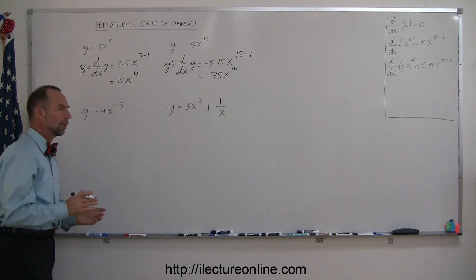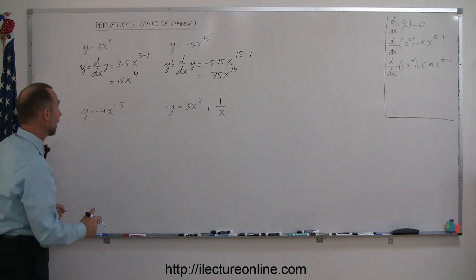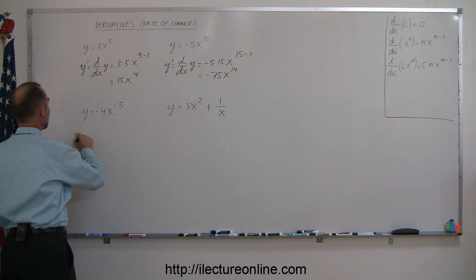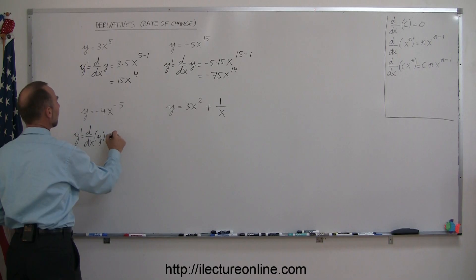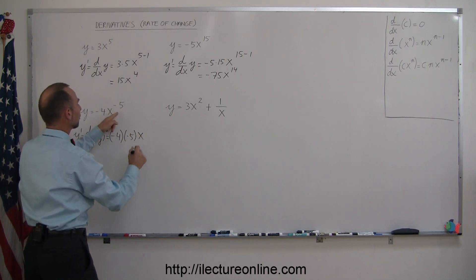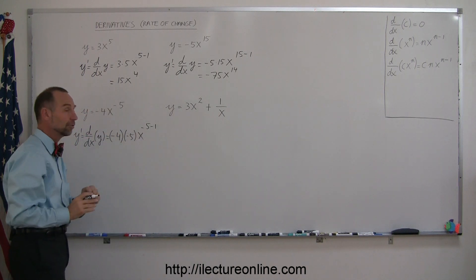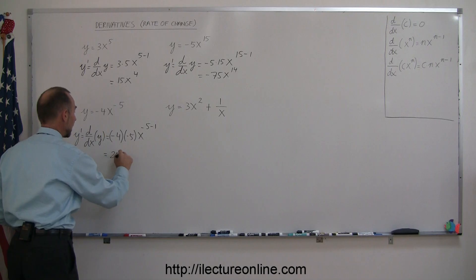Do one more here. Now you say, well, wait a minute, how does it work when you have a negative exponent? Well, it actually works exactly the same, so you have y prime, which is d/dx of y, so again, you bring the exponent down and multiply times the constant, so it's minus 4 times minus 5 times x to the exponent minus 1, that rule hasn't changed even if it's a negative number, and so this equals 20x to the minus 6th power.